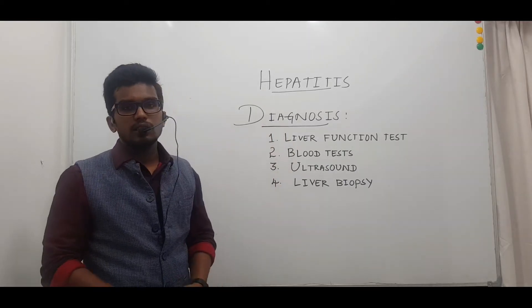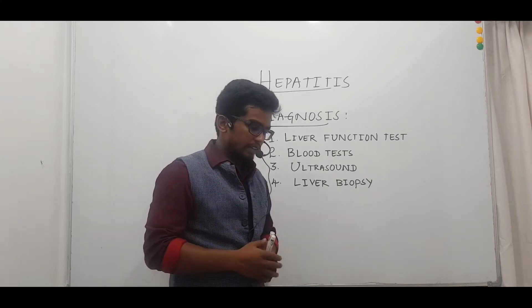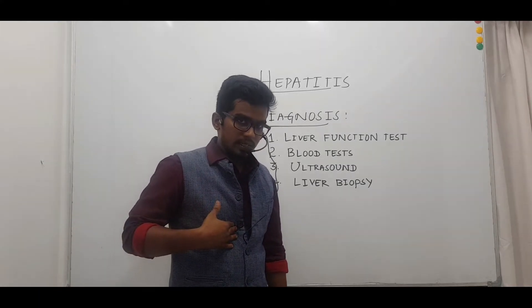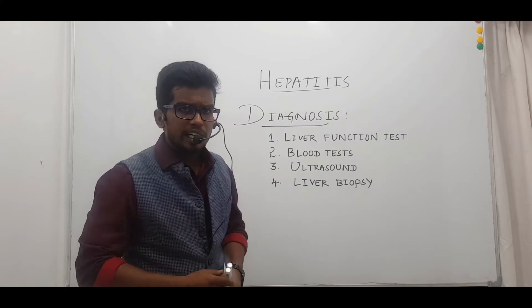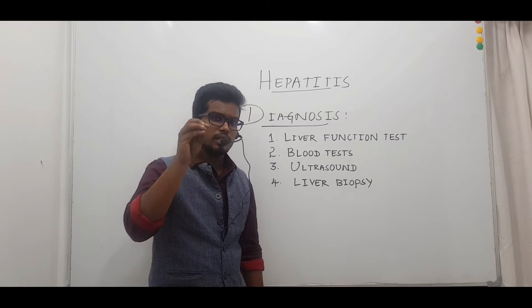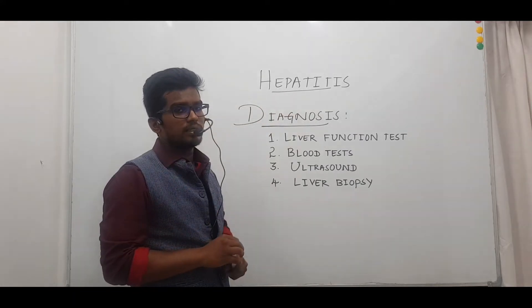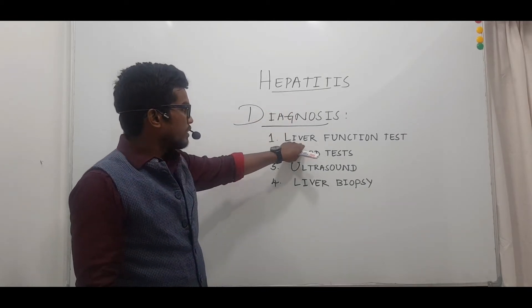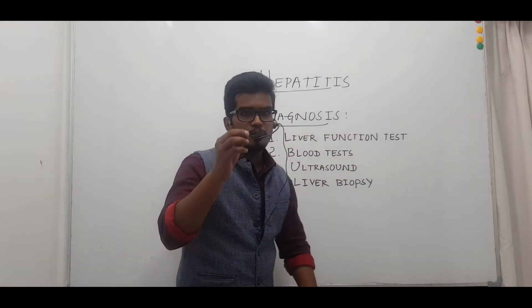Moving on to diagnosis — first, the doctor will go for a physical examination of the patient, pressing the abdomen to check whether there is pain or tenderness. By pressing the abdominal region, the doctor will check whether the liver is enlarged or not, and by identifying symptoms of jaundice — yellowing of eyes and nails — may suspect that the patient has hepatitis.